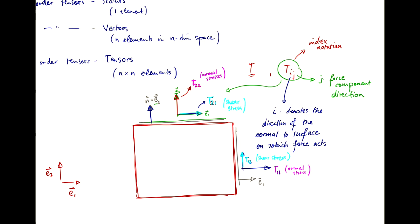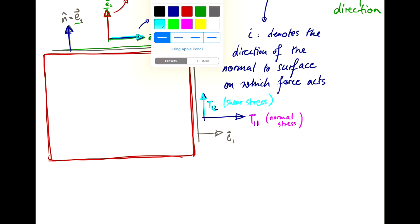And so, in 2D you have four stress components. You have normal stresses in both basis directions and shear stresses in both basis directions. And so, in matrix form we write this tensor T as T11 T12, T21 T22, with the diagonals being the normal stresses and the off-diagonals being the shear stresses.